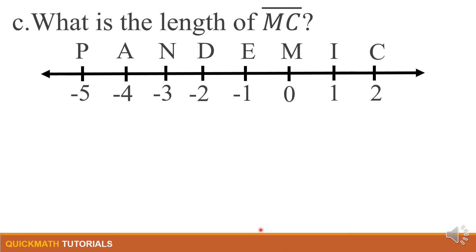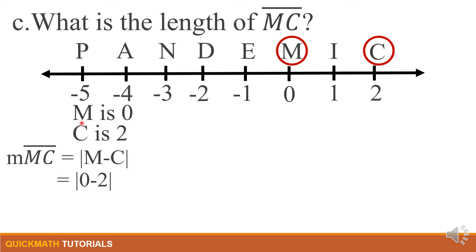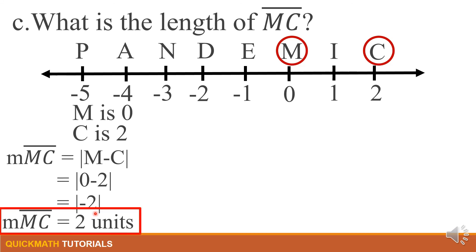For our last example using the subtraction method: what is the length of line segment MC? Our point M is here and its coordinate is 0. Our point C is here and its coordinate is 2. To find the length of MC, we take the absolute value: |M − C| = |0 − 2| = |−2| = positive 2. Therefore, the length of line segment MC = 2 units.